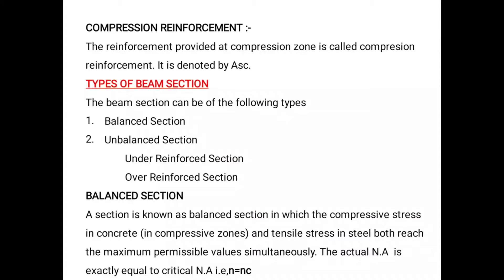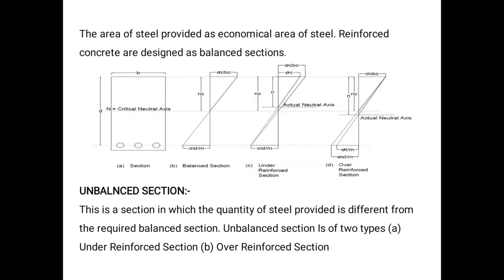There are three types of beam sections: balanced section, under-reinforced section, and over-reinforced section. In a balanced section, the critical neutral axis meets the actual neutral axis at the same point, meaning the section is balanced in both the compression zone and the tension zone.